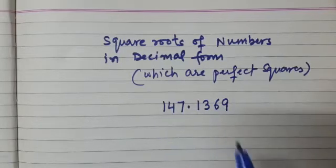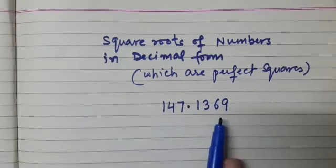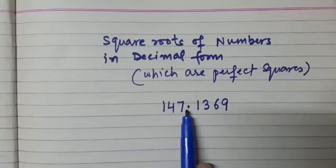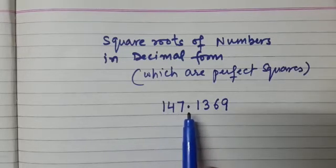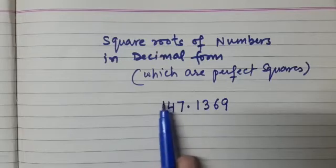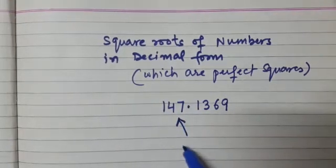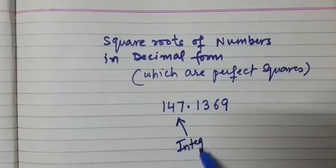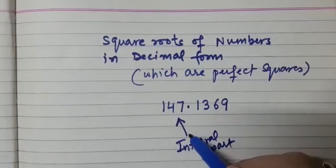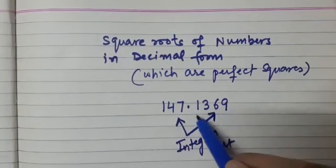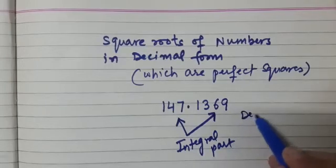So what is the method? The method says, now you see there are two parts. One is before the decimal, that is 147, and this we call as the integral part. And after the decimal, we have 1369. So this is the decimal part.